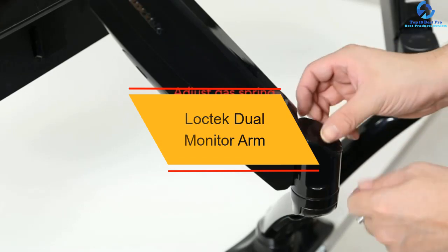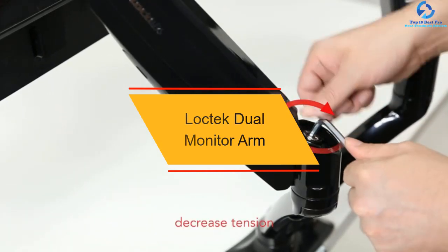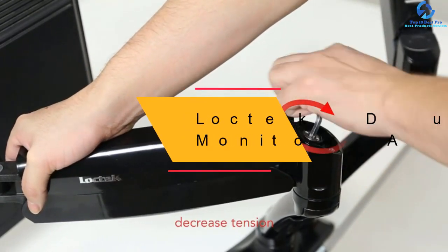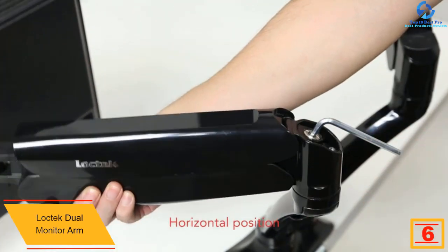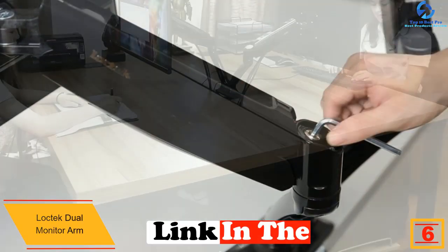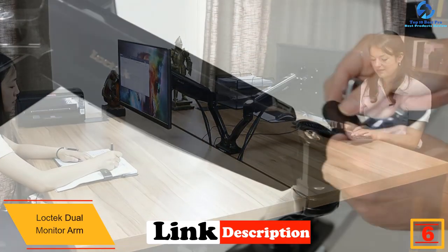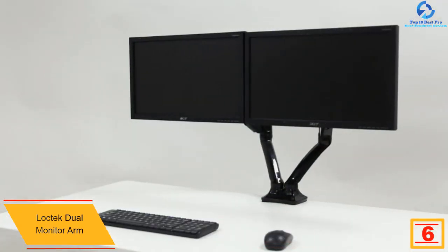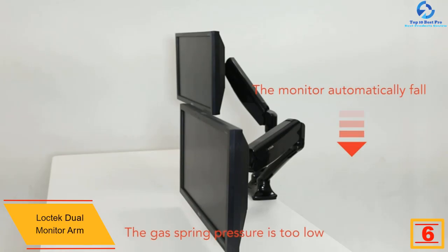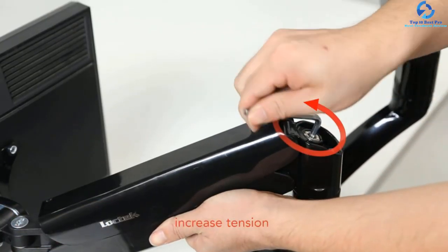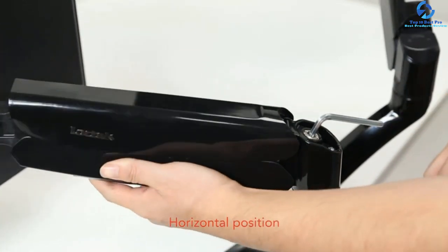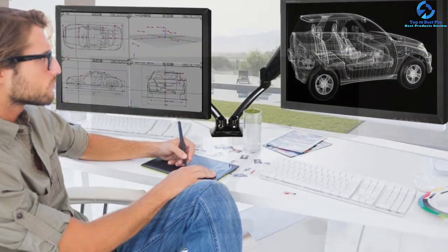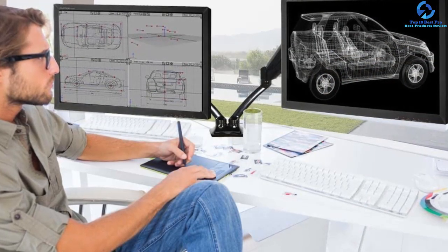At number 6, we have the Lochtec Dual Monitor Arm. This modern dual monitor stand comes with an exclusive hovering system that allows you to adjust the monitors in a simple manner. The arms of this stand can rotate 360 degrees horizontally. It is made using aircraft-grade aluminum which also has anti-scratch surface to ensure it remains looking as good as new.